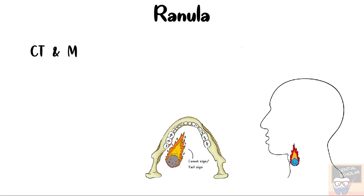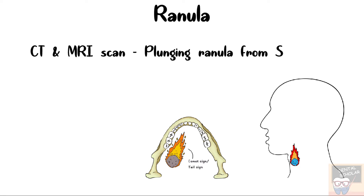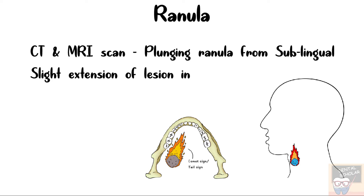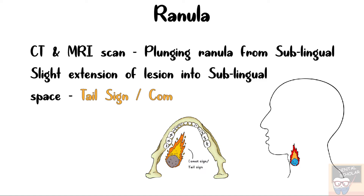The CT and MRI scan of a plunging ranula from the sublingual gland may show a slight extension of the lesion into the sublingual space, and this may be described as a tail sign or a comet sign.